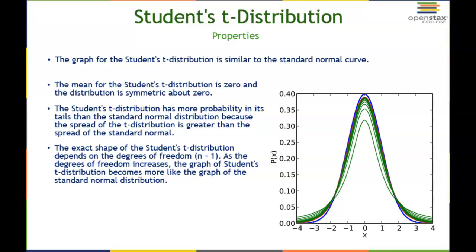As the degree of freedom increases, the graph changes and becomes more like a normal distribution. Most of the time, we use t distribution when our n value is less than 30, so it has a small n value.